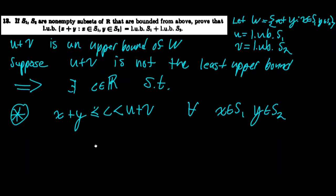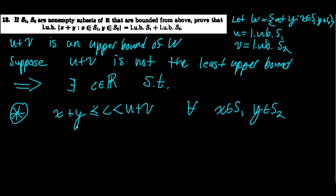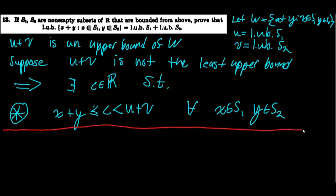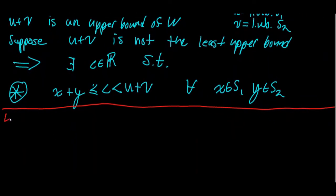If we can prove ★ is a contradiction, then there can't possibly be an upper bound smaller than u + v, so u + v must be the least upper bound. Before proving ★ is a contradiction, we'll use two auxiliary results — lemmas — to help us along.